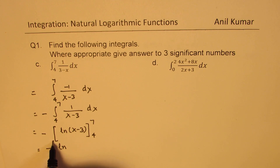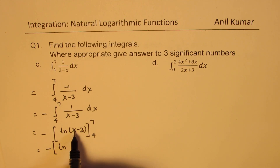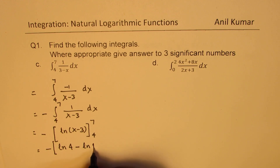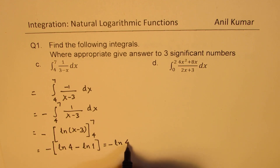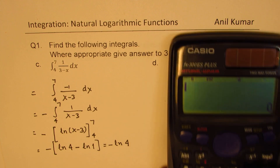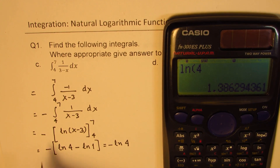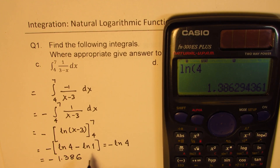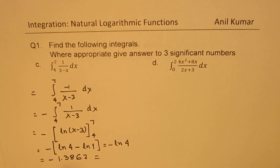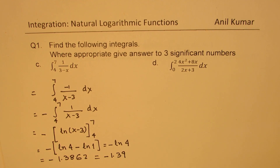So that is negative of ln of (x minus 3) from 4 to 7. Substituting 7 gives ln 4, and substituting 4 gives ln 1. Since ln 1 is 0, the answer is minus ln 4. Using a calculator, ln 4 equals approximately 1.3863, so the answer rounded to three significant figures is minus 1.39.